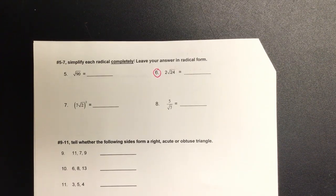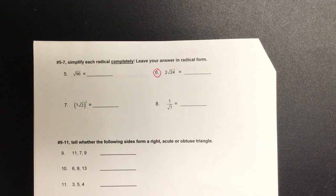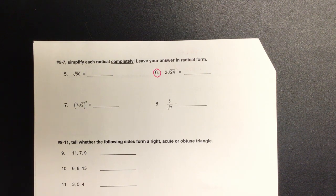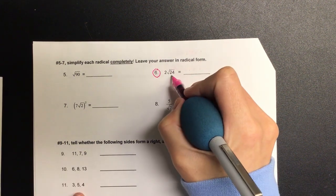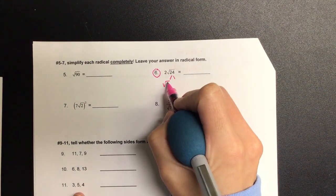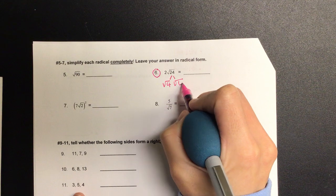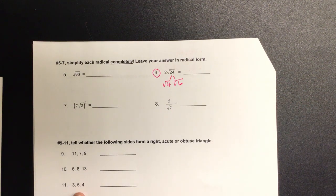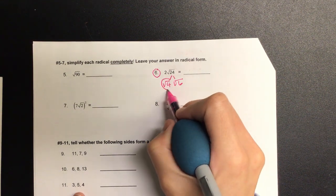For problem six, we need to simplify by going inside the radical first. In this radical, what two numbers can I split this into? Four and six. If you want to do two and twelve, that's okay, you'll just have to factor further. Isn't this a perfect square?